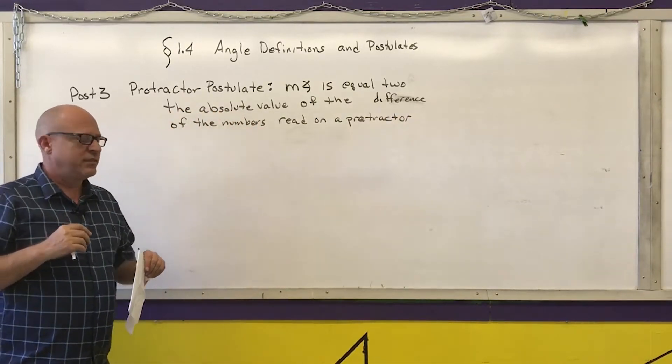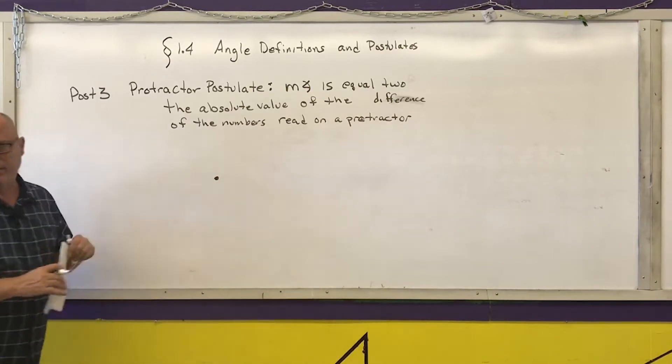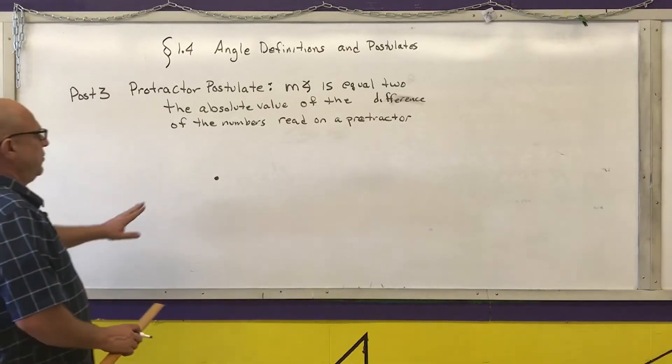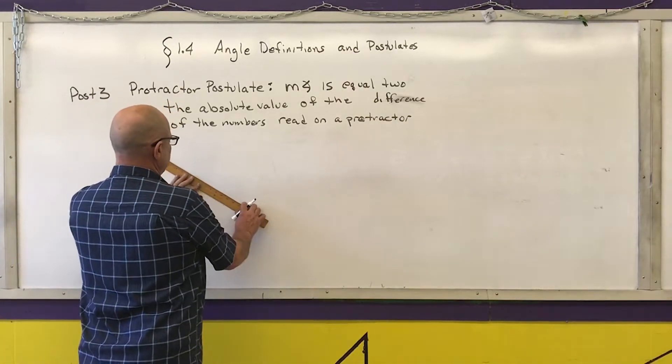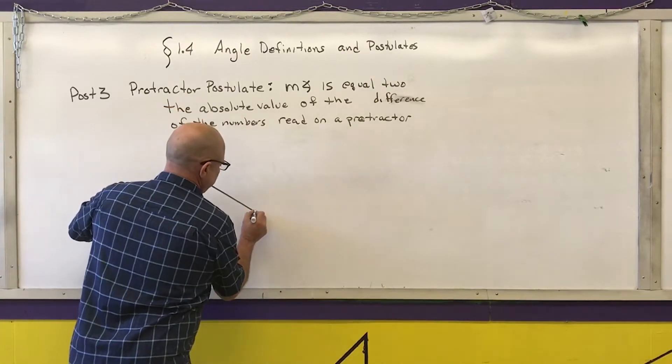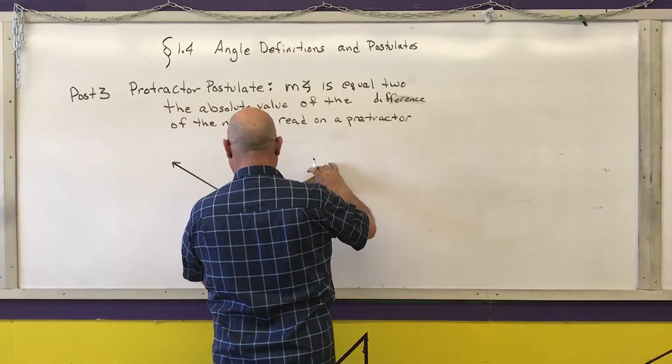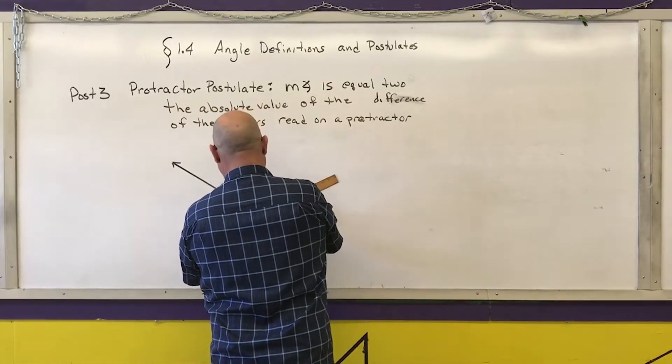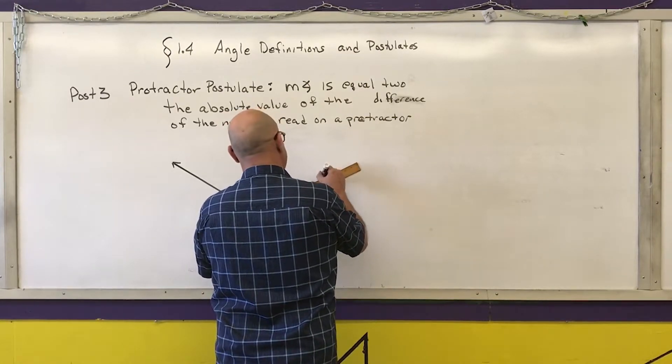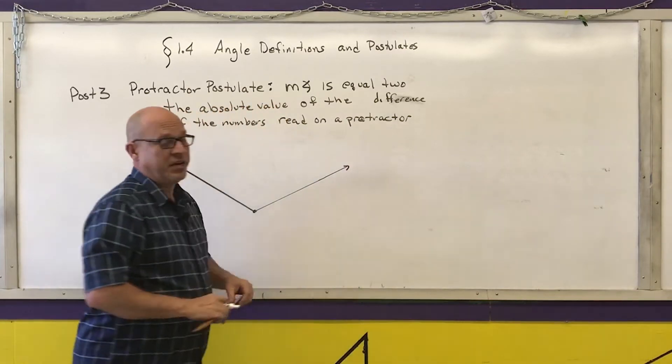A lot of times you'll put the zero as one of your rays, but you don't necessarily have to do that. So what I'm going to do is I'm going to use a straight edge and draw an angle and then I'm going to show you using my protractor how I can come up with its measurement. So here's an angle.